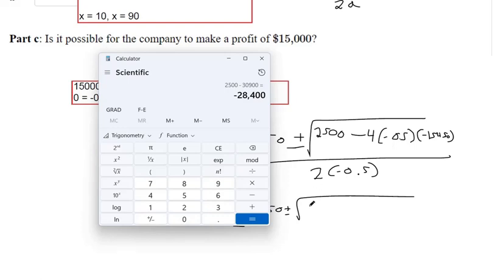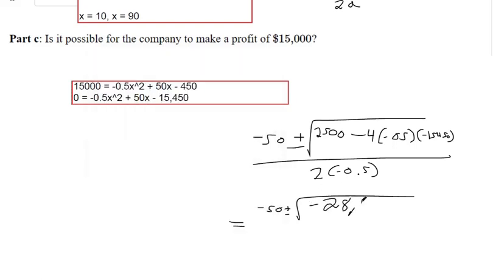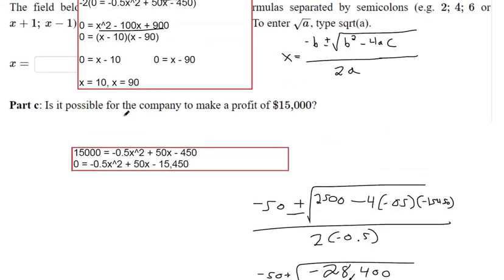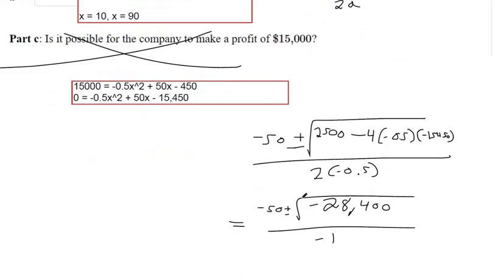So inside the radical, you'll get negative 28,400. And so if you didn't get a negative, you'd want to keep simplifying. 2 times 0.5, that's negative 1. But a square root of a negative, that's something called an imaginary number. It doesn't exist in reality. It's not a counting number. It's not a rational number, any of that stuff. So if you get a square root of a negative, that means it's not possible. We would say no, because there is no solution to this equation right here.